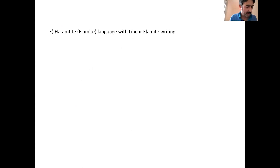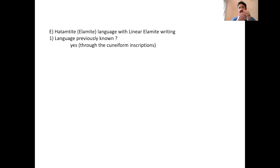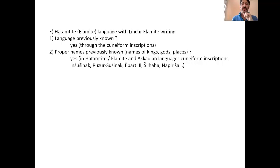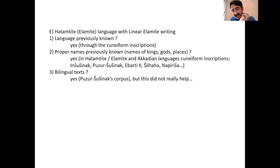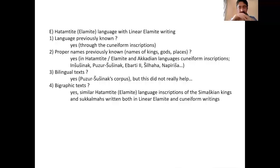So let's see how we made this decipherment. Did we have previous access to the language? Yes — we had previous knowledge of the Hatamtite or Elamite language through cuneiform inscriptions. Did we know proper names like kings, gods, and places? Yes — through Hatamtite/Elamite and Akkadian cuneiform inscriptions: Inshushinak, Puzur-Inshushinak, Ebarti, Shilhak, Napirisha, and so on. Did we have bilingual texts? We had the purpose of Puzur-Inshushinak, but that didn't really help. What really helped were bigraphic texts — similar Hatamtite or Elamite language inscriptions written both in Linear Elamite and cuneiform writing systems: the same language, almost the same content, but in two different writing systems.